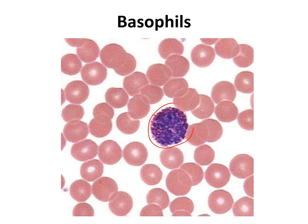Basophils are also found in the blood, but there aren't very many of them — they make up about 1% of the white blood cells. Their purpose is to release histamine, which triggers inflammation. So they do not directly destroy microbes, but they trigger an inflammatory response.